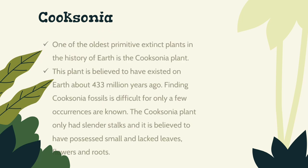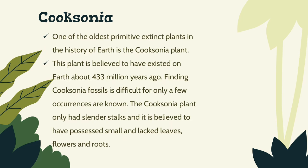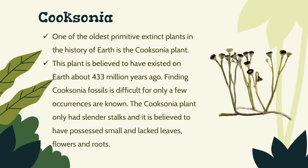Cooksonia. One of the oldest primitive extinct plants in the history of Earth is the Cooksonia plant. This plant is believed to have existed on Earth about 433 million years ago. Finding Cooksonia fossils is difficult, for only a few occurrences are known. The Cooksonia plant only had slender stalks and is believed to have possessed small and lacked leaves, flowers, and roots.